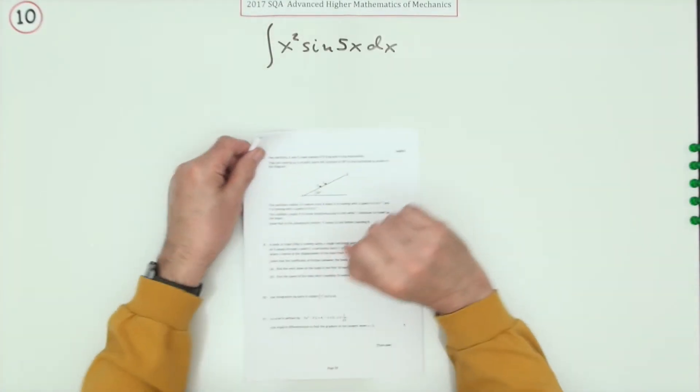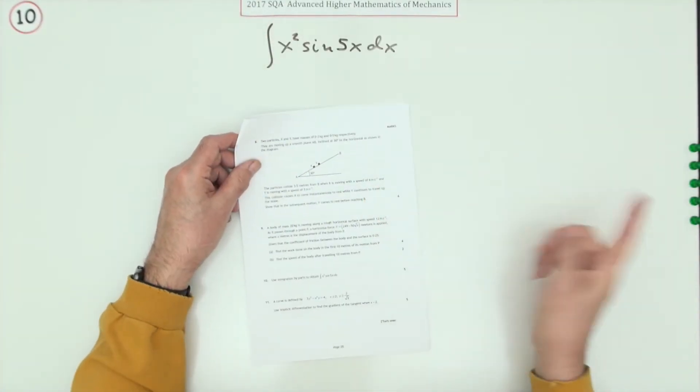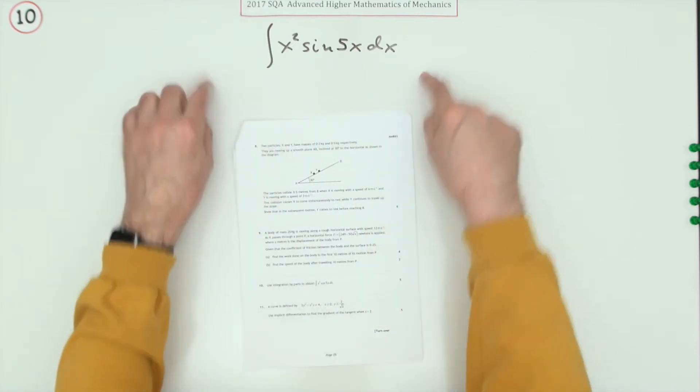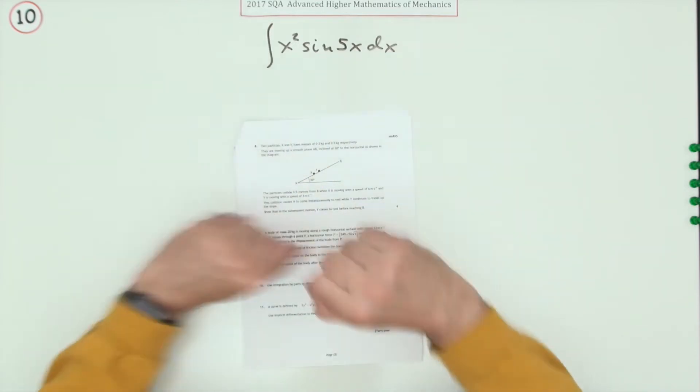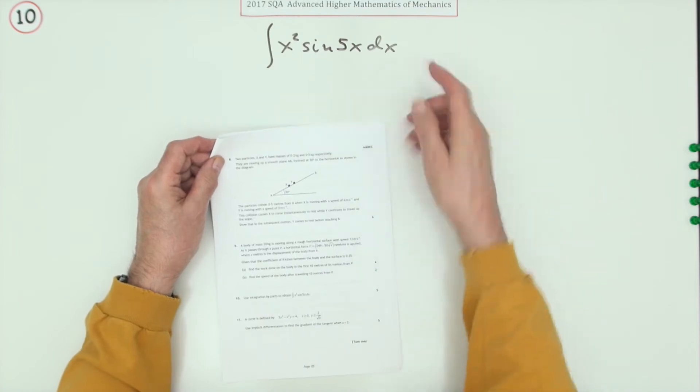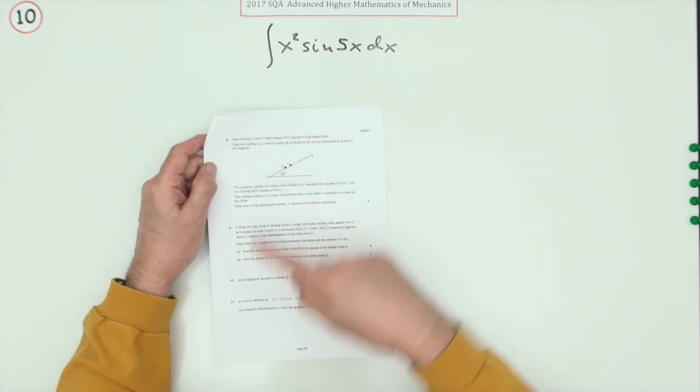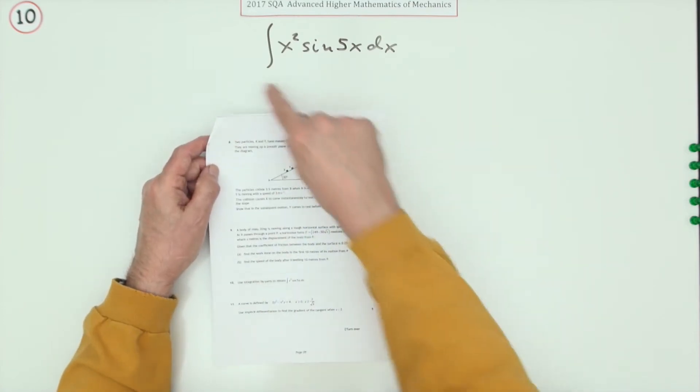Number 10, from the 2017 mathematics and mechanics five mark question. A little bit of light relief again, just a little sum to do effectively here. No thinking about interpreting the situation. Use integration by parts to obtain this integral.